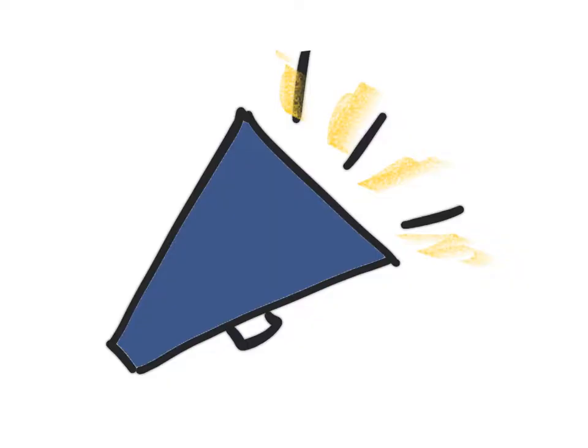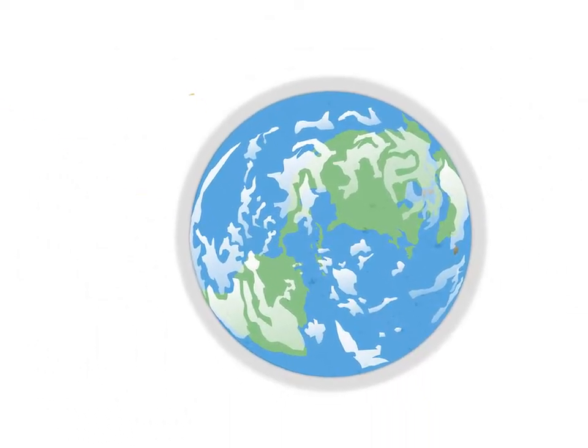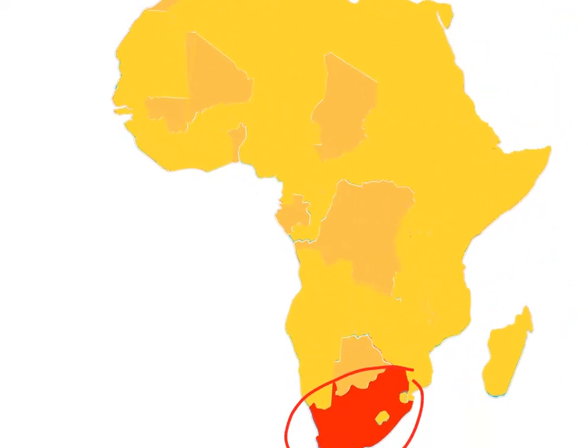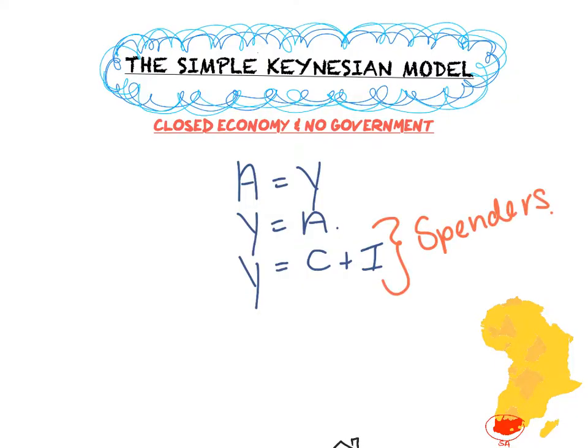It's important to note that we are talking about the introductory model, a model with only two spenders. This means that we are going to ignore the foreign sector and the rest of the world. We are not going to look at the entire African continent. Our focus will be on South Africa. So today we are going to look at the simple Keynesian model for a closed economy and no government.